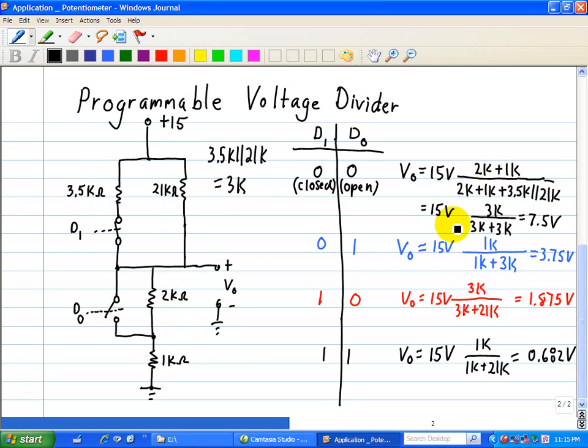So basically what we have is 3k divided by 3k plus 3k, which is just one-half, or 7.5 volts, which is one-half of the 15 volts. So this yields an answer of 7.5 volts for that case.